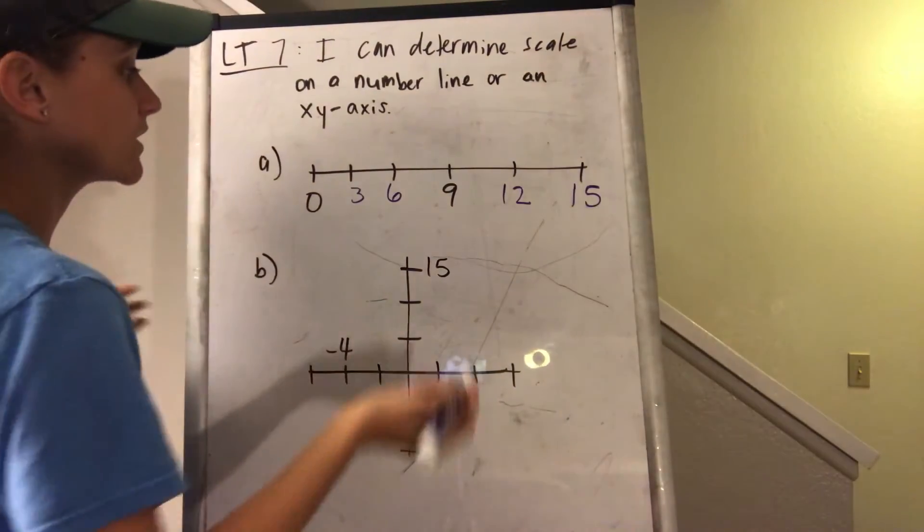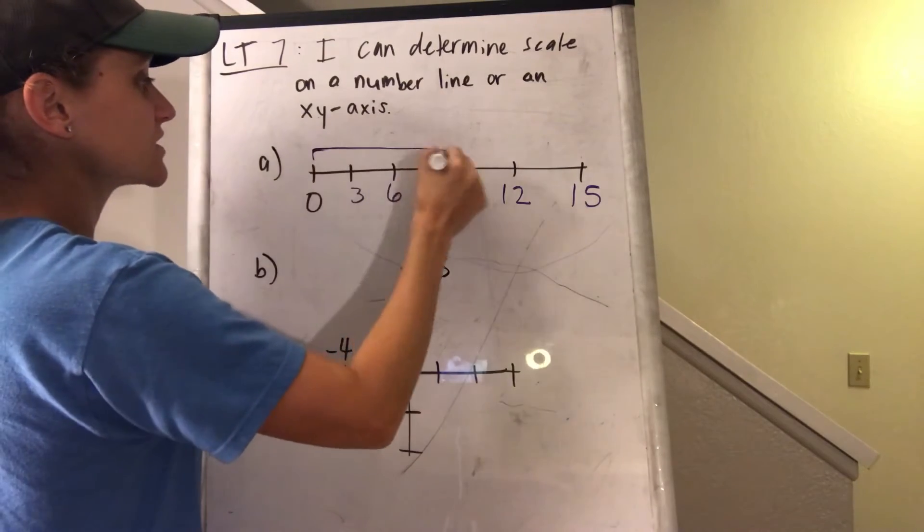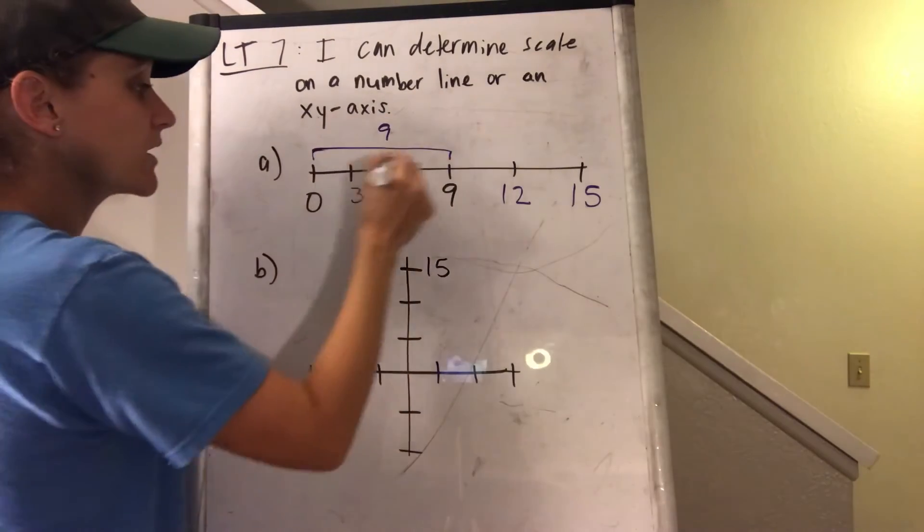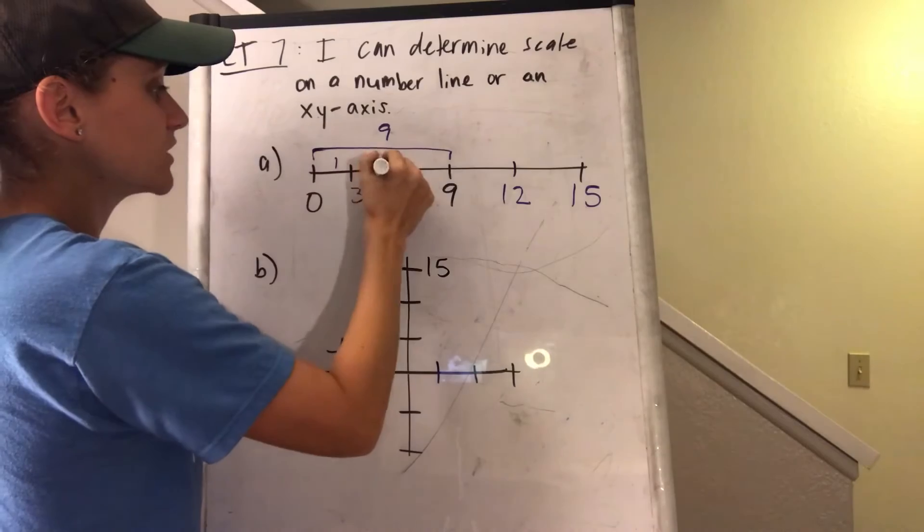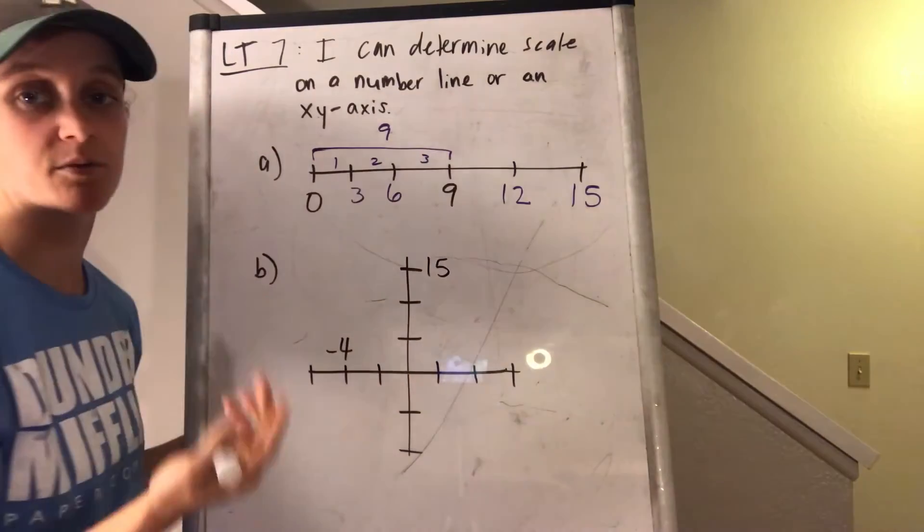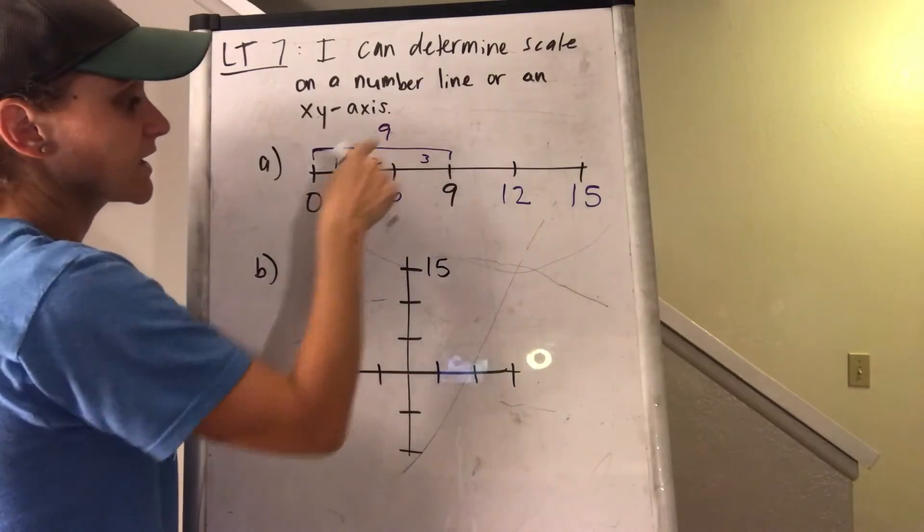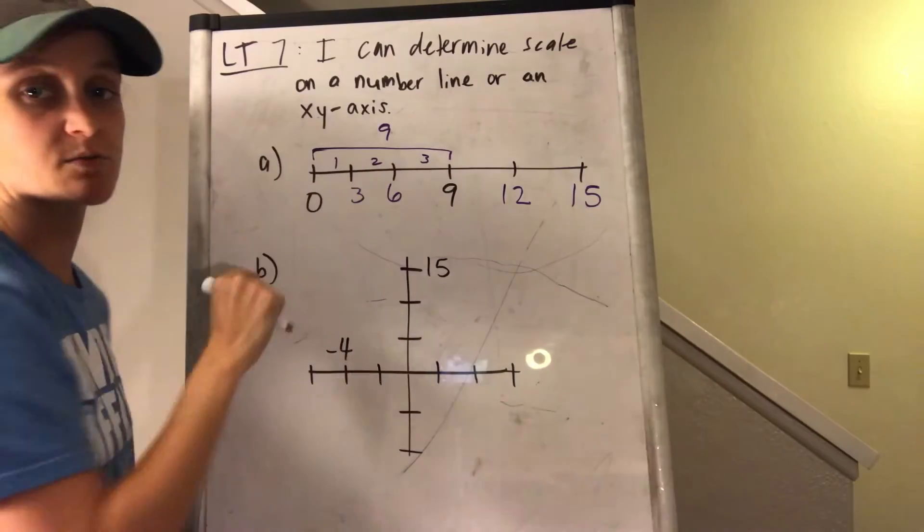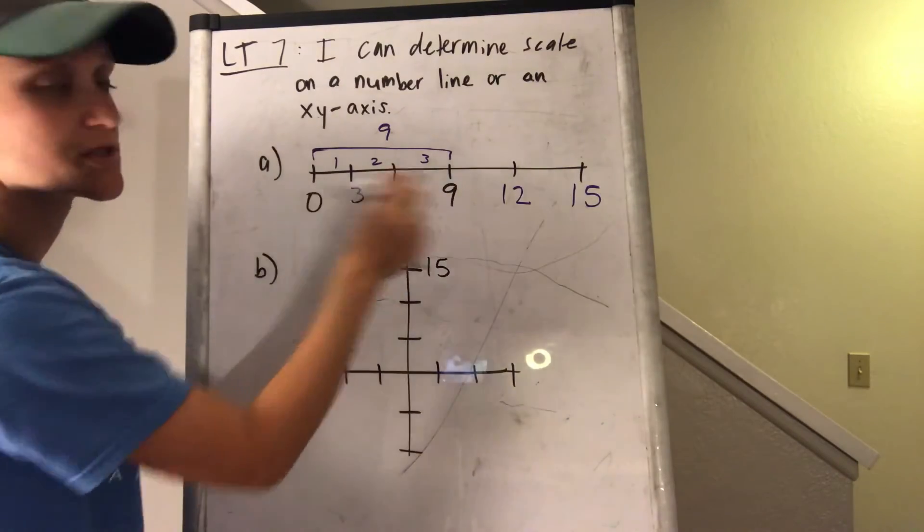Or if you want to do it a different way, you could figure out, well this distance is 9. And I'm cutting it up. There's 1, 2, 3 sections I'm cutting it up into. So if I take 9 divided by 3 sections, that's going to be 3 per section. So that's how I know it's going to be a 3.